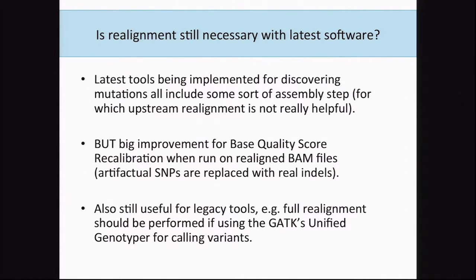You might ask: is realignment still necessary with the latest software? Later you'll learn about HaplotypeCaller, which has its own realignment step within it, so you might think this step is no longer necessary. However, there are several other steps in the pipeline that can be affected by indel realignment — particularly base quality score recalibration. If you don't run indel realignment, artificial SNPs can affect BQSR. It's also still useful if you need legacy tools like the UnifiedGenotyper for calling variants.